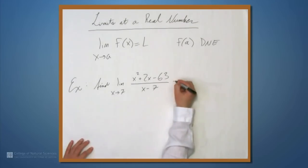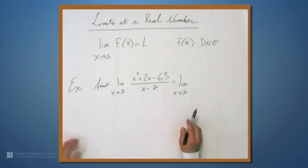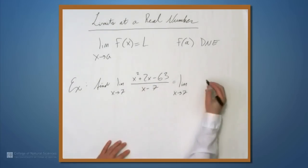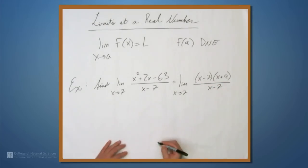So step 1 is to say that this is the same thing as the limit as x approaches 7, and what do we do if we have a quadratic? Always tempted to factor. This numerator factors into x minus 7 times x plus 9, and then this is still all over x minus 7.